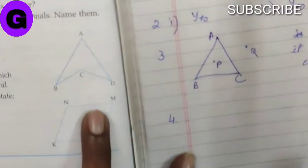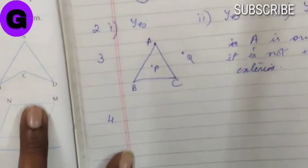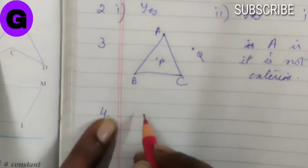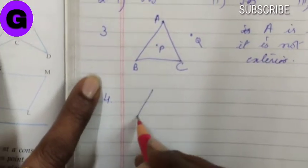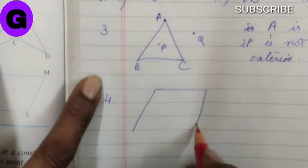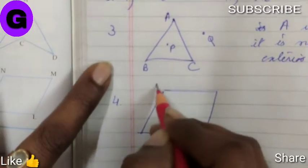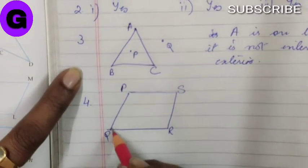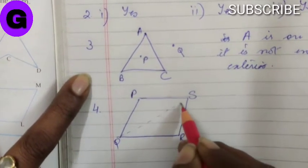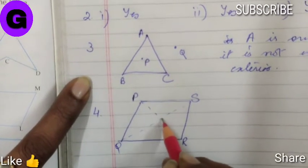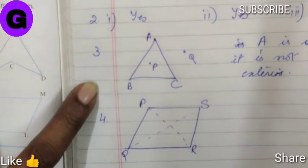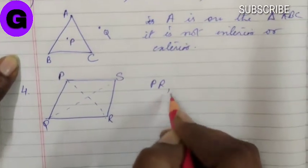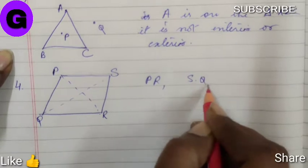Number 4, we have to draw a rough sketch of a quadrilateral P, Q, R, S. Now we have to draw its diagonal and name them. So the diagonals are P, R and S, Q.